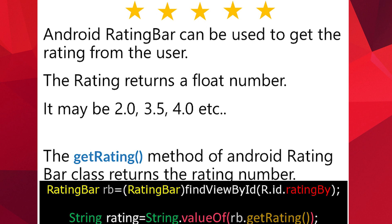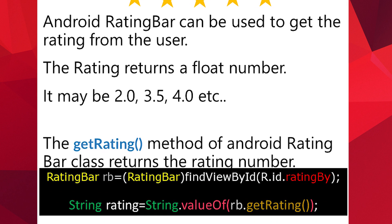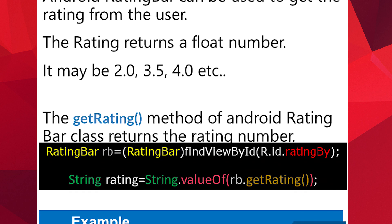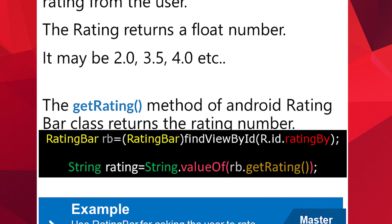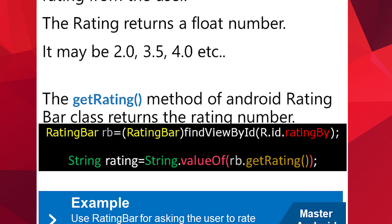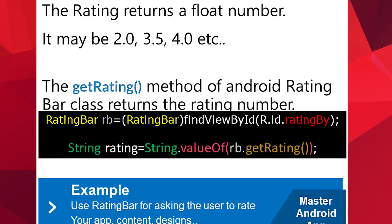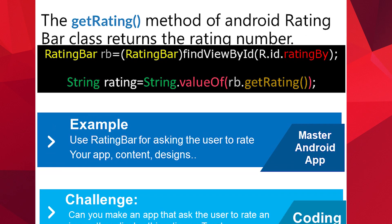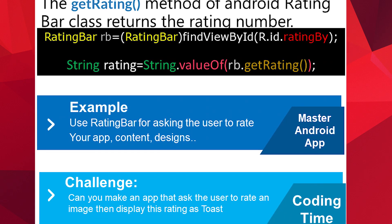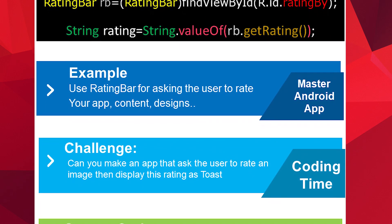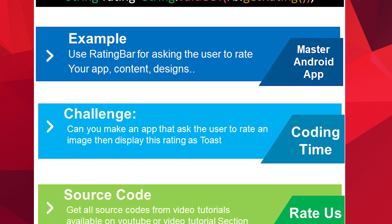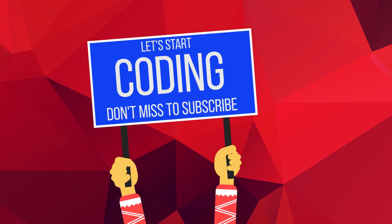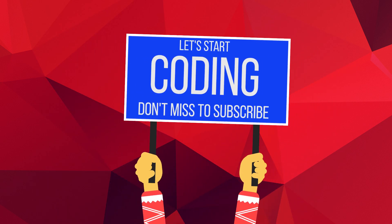There are a lot of methods that can be used by the Rating Bar. The getRating() method of the Android Rating Bar class returns the rating number. We will use getRating() and other methods in this video. The customization or initialization of the Rating Bar would be done in code, and the rating would be represented as a string or a number.